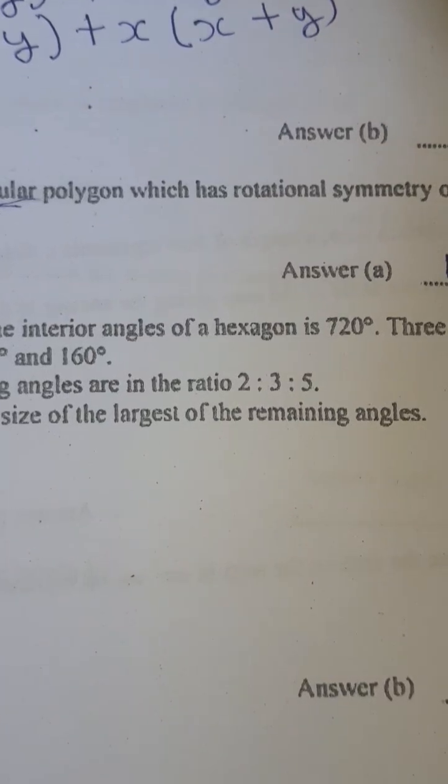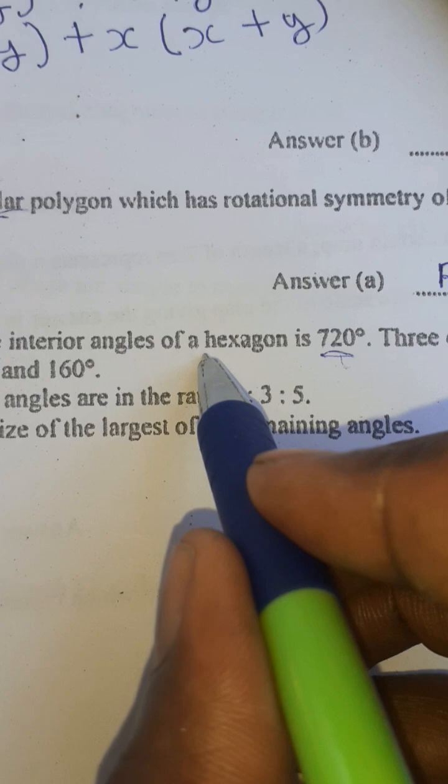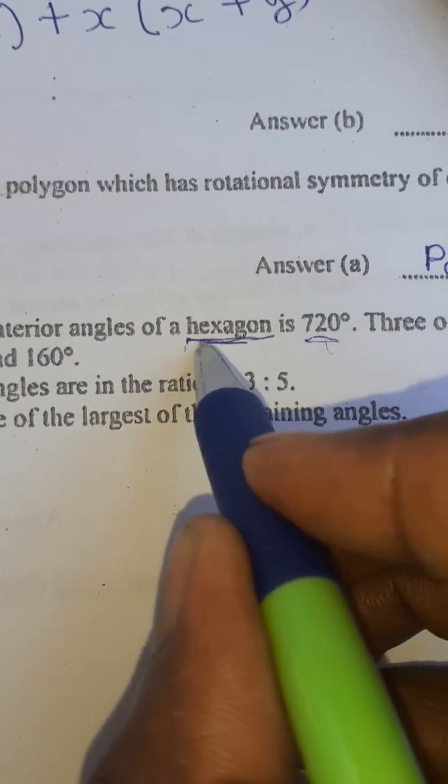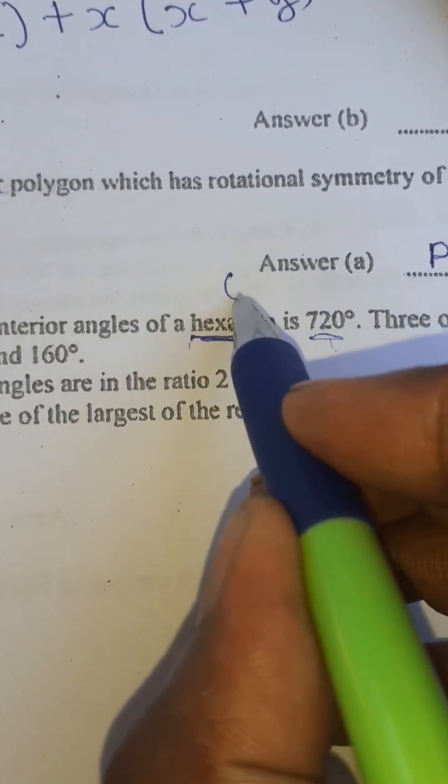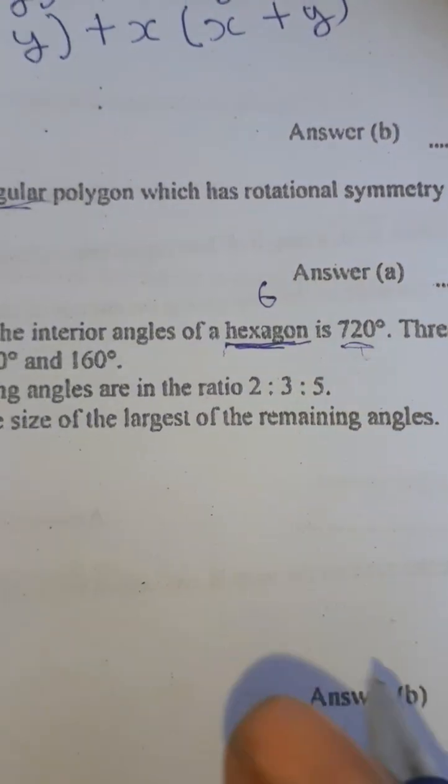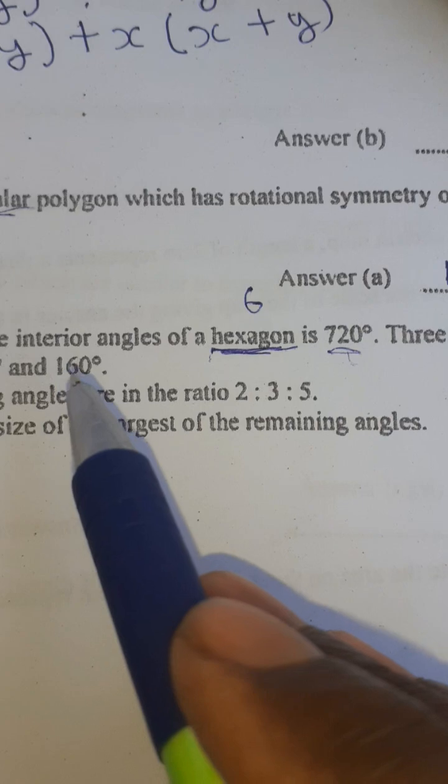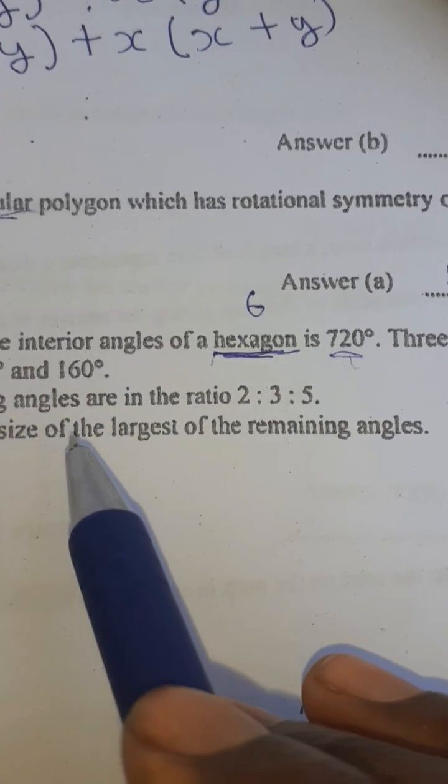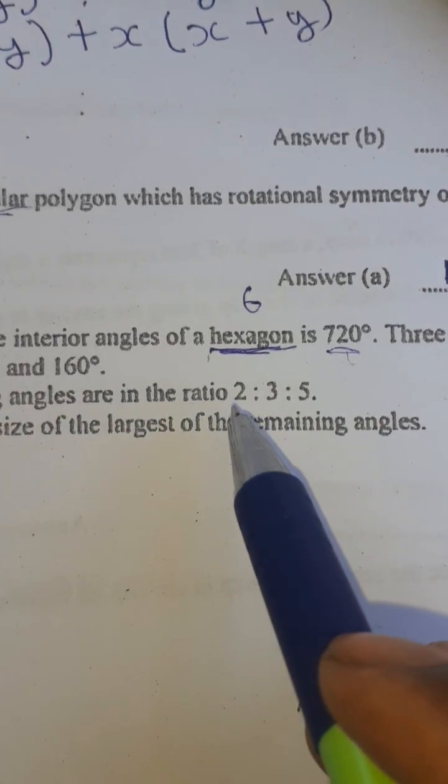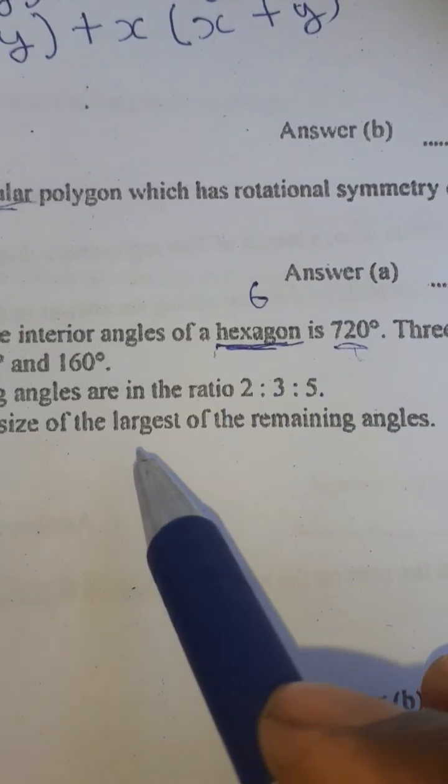The sum of the interior angles of a hexagon is 720. We have some key words here - hexagon is the shape with six sides. Three of its interior angles are 140, 120, and 160. The remaining angles are in the ratio 2:3:5. Calculate the size of the largest remaining angles.